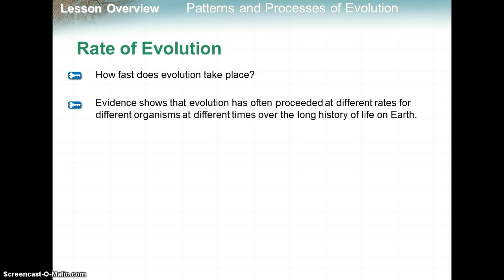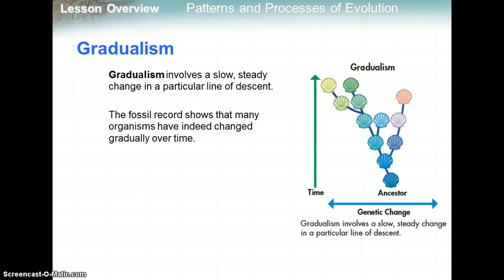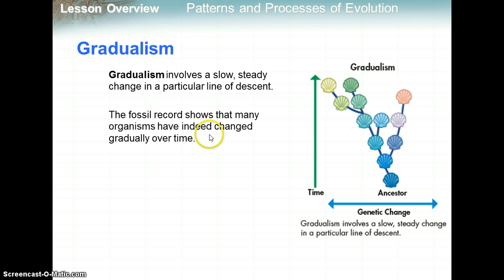We're going to talk about different rates and patterns of evolution. One type is called gradualism — it involves a slow and steady change in a particular line of descent. Here the ancestor is shown, and slowly over time — with time on the y-axis — we see different genetic changes arise along the x-axis. The fossil record shows that many organisms have indeed changed gradually over time.